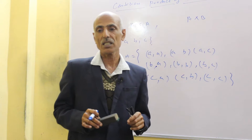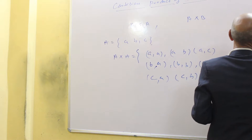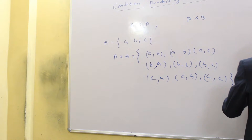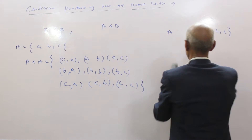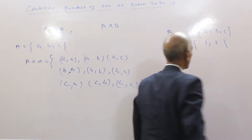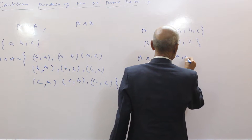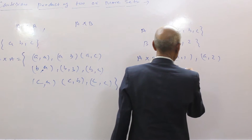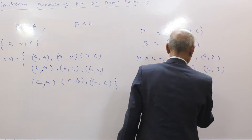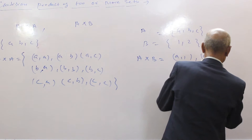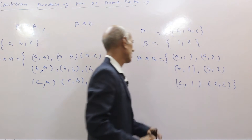Now consider another set. Let A = {a, b, c} and B = {1, 2}. If we find A Cartesian product B, the elements are: (a,1), (a,2), (b,1), (b,2), (c,1), (c,2). This is the Cartesian product of the two sets A and B.